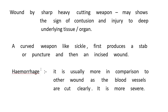Wounds by a sharp heavy cutting weapon may show signs of contusion and injury to deep underlying tissue and organs. A curved weapon like a sickle first produces a stab or puncture and then an incised wound. Hemorrhage is usually more compared to other wounds as the blood vessels are cut cleanly, making it more severe.